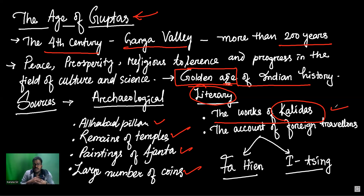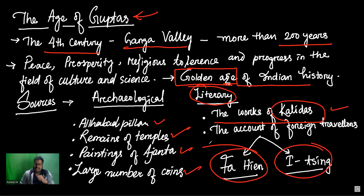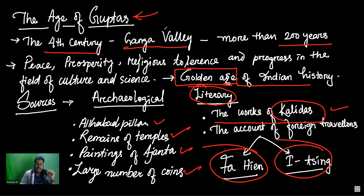The second category of literary sources is the foreign travelers who came to India at various times and what they wrote. Two very famous Chinese travelers came to India during the Gupta period — one of them is Faxian and the other is Yijing. They came and wrote in their memoirs, and by reading those, we can also find out what was going on here during the Gupta period.